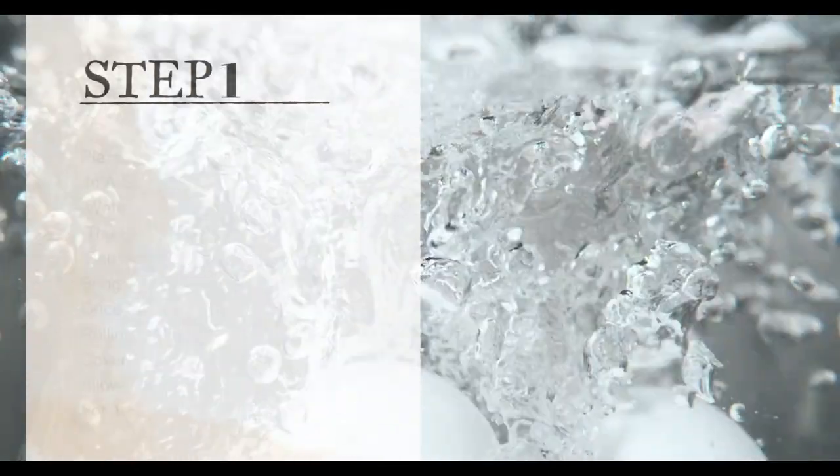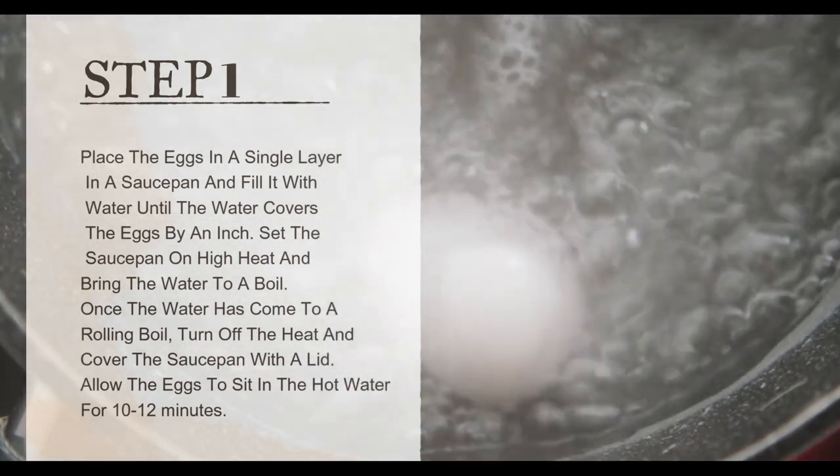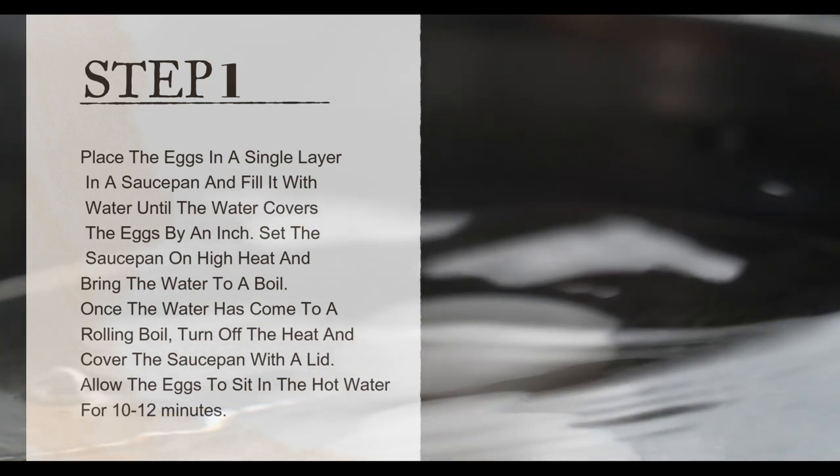Instructions Step 1. Boil the eggs. Place the eggs in a single layer in a saucepan and fill it with water until the water covers the eggs by an inch. Set the saucepan on high heat and bring the water to a boil.